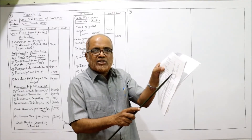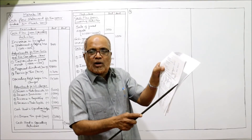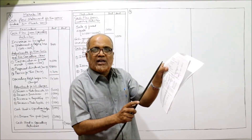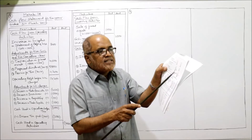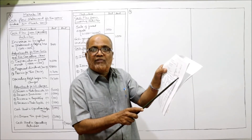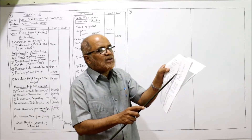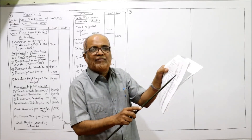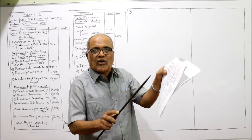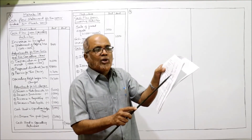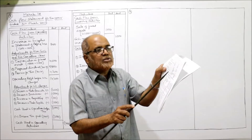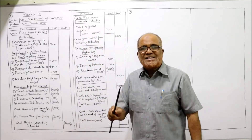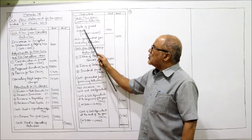Remember the printing mistake: first column values should go to the second column and vice versa. So original cost: 41,000 becomes 40,000 current year; depreciation: first column 11,000 corrected to 15,000 for current year, second column 15,000 corrected to 11,000 for last year. Sale of fixed asset: 1,000. Depreciation provided during the year: 4,000.